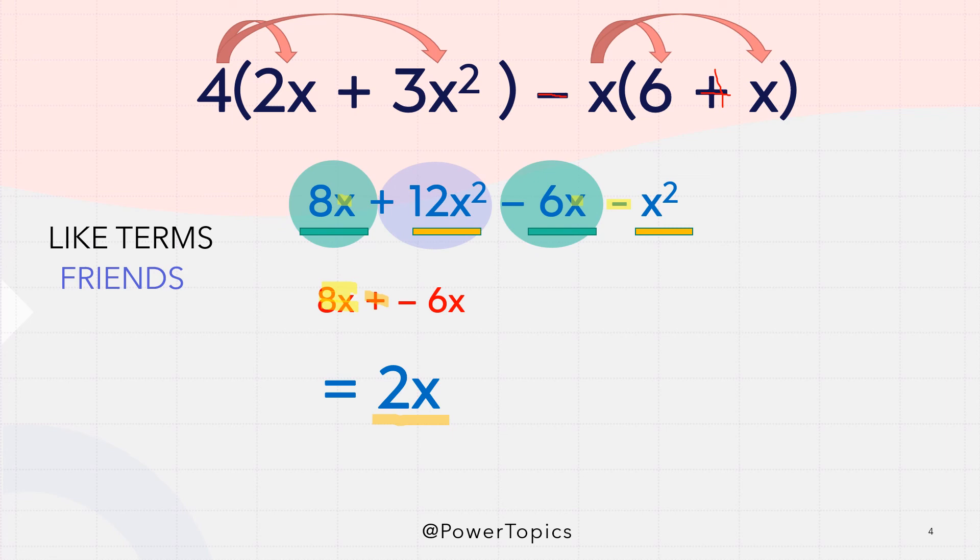Now let us move on to the other like terms. Collect them. Positive 12x square and negative x square. So 12x square minus x square.